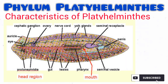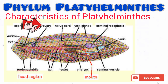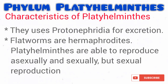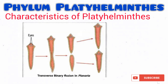Flatworms are hermaphroditic. This means that a single individual can produce both the male gamete as well as the female gamete. Platyhelminthes are capable of reproducing both asexually and sexually. Sexual reproduction involves the production of gametes which fuse to form a zygote, while asexual reproduction may involve binary fission. In the case of planaria, binary fission occurs by the organism simply splitting into two halves, and each part regenerates the lost part to form two separate individuals. Note that this organism possesses great regenerative ability.